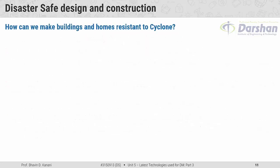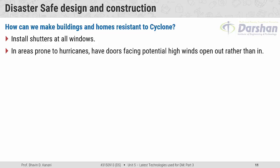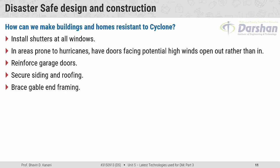How can we make buildings and homes resistant to cyclones? Install shutters at all windows. In areas prone to hurricanes, have doors facing potential high winds open outward rather than inward. Reinforce garage doors, secure siding and roofing, brace gable end framing, and use steel framing connections.